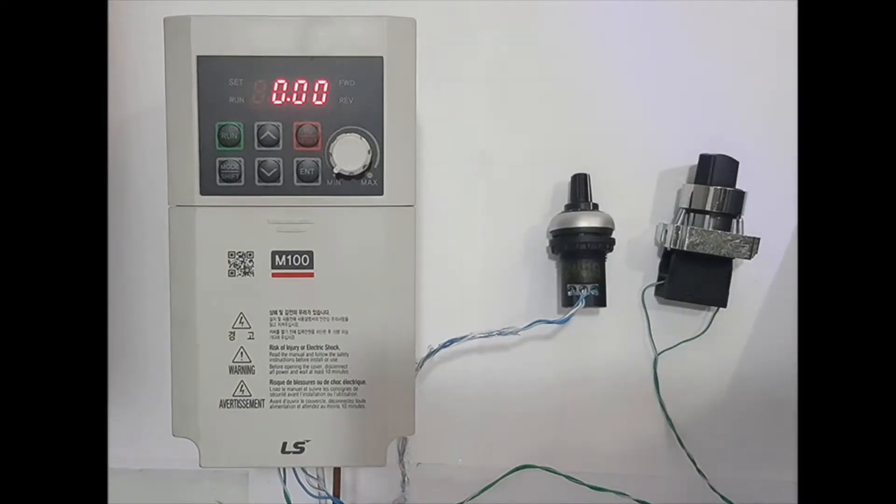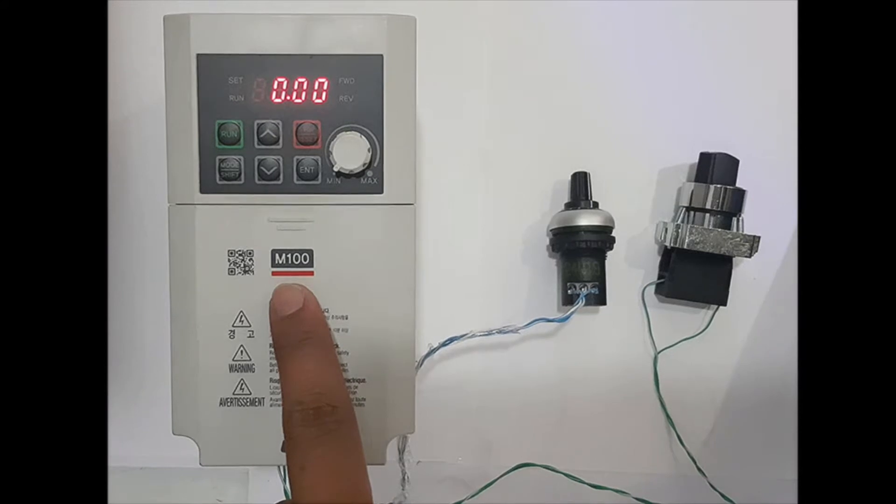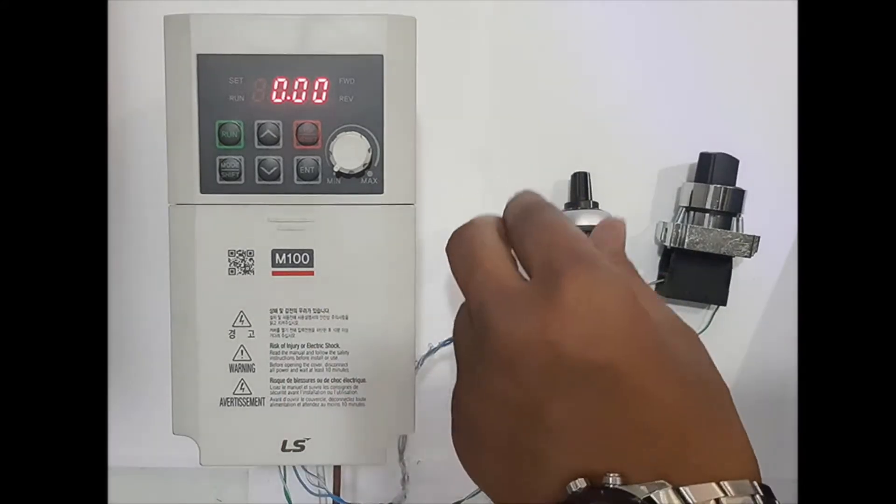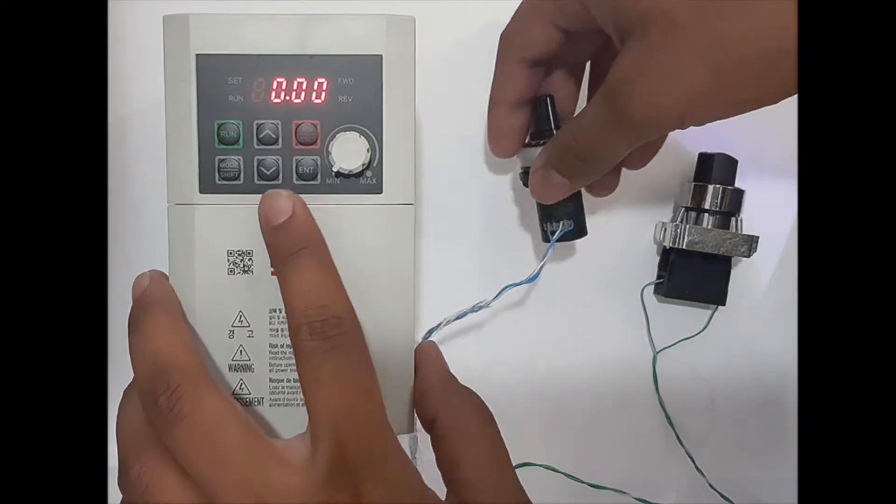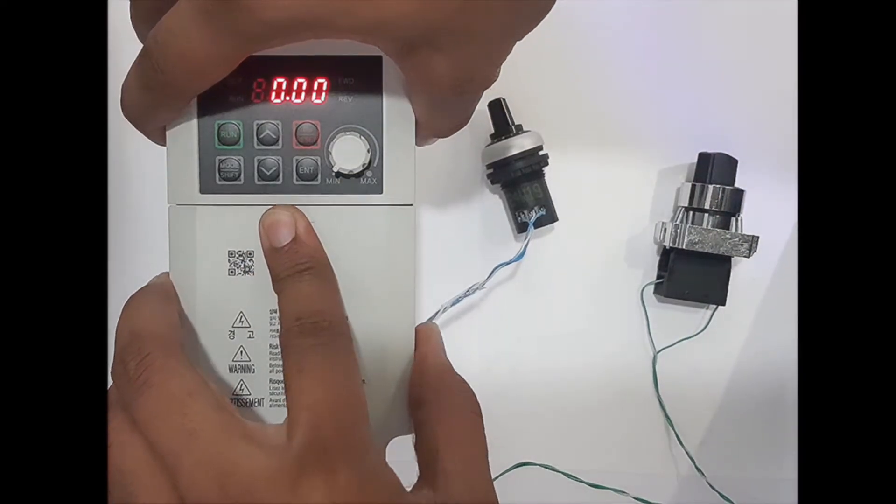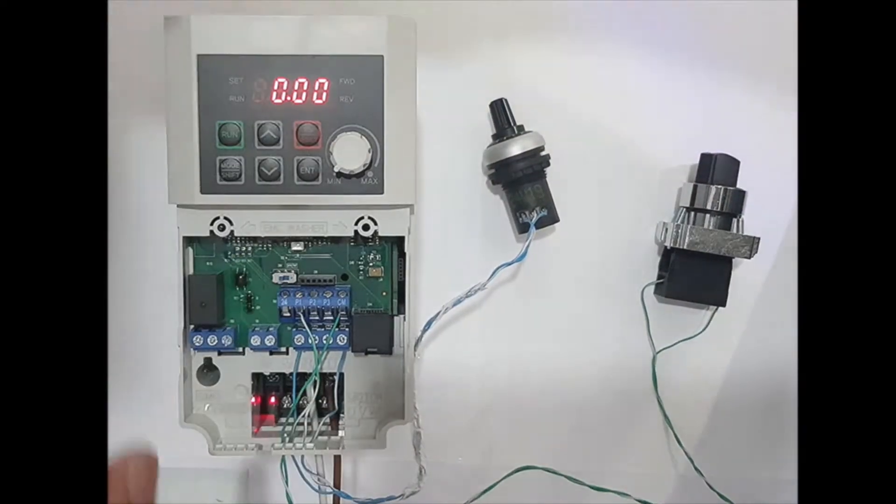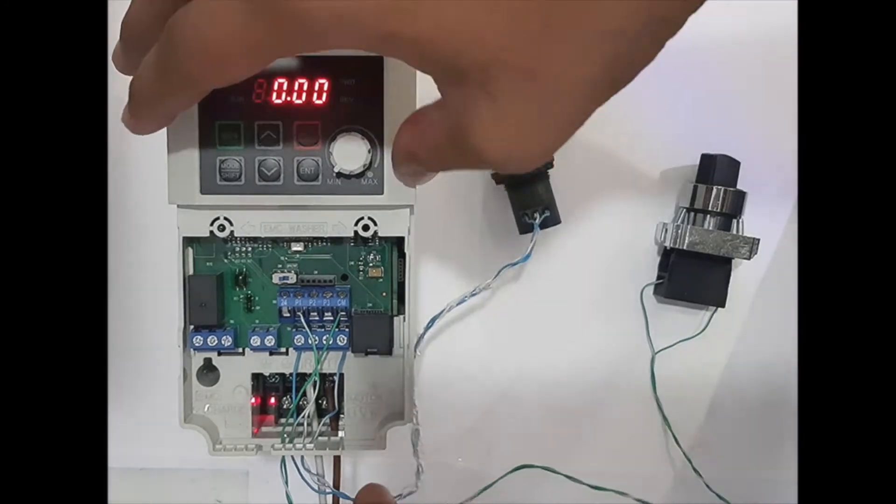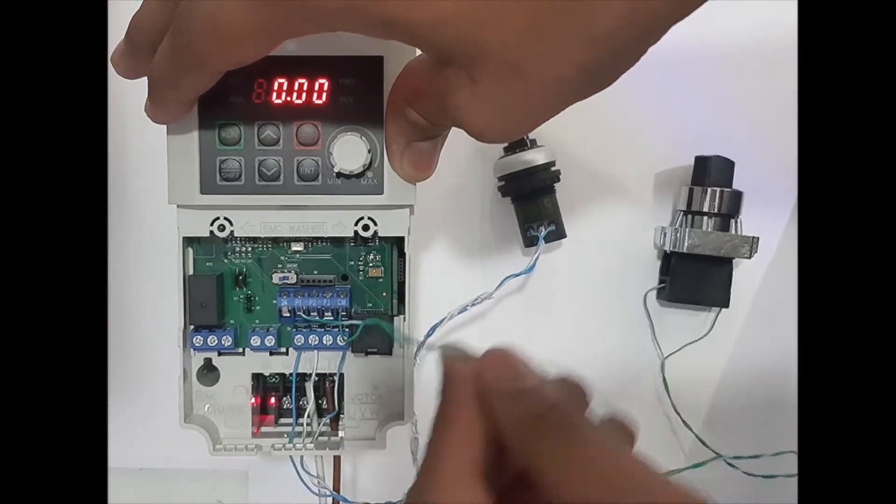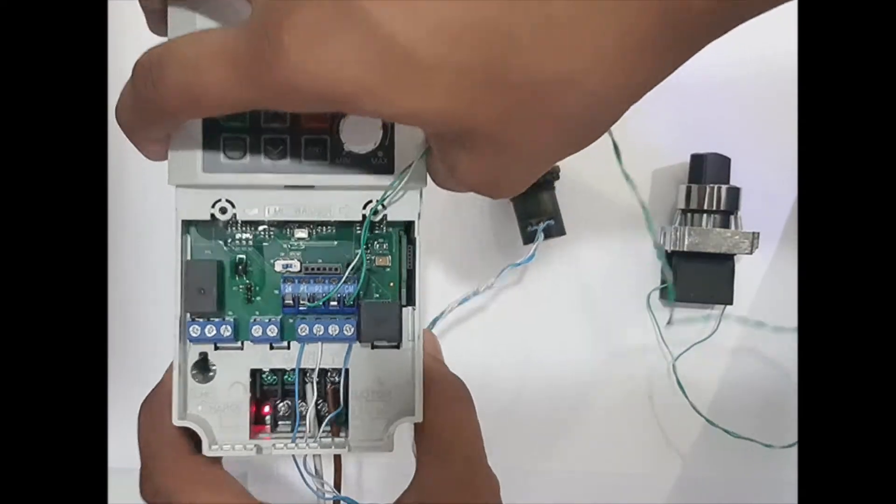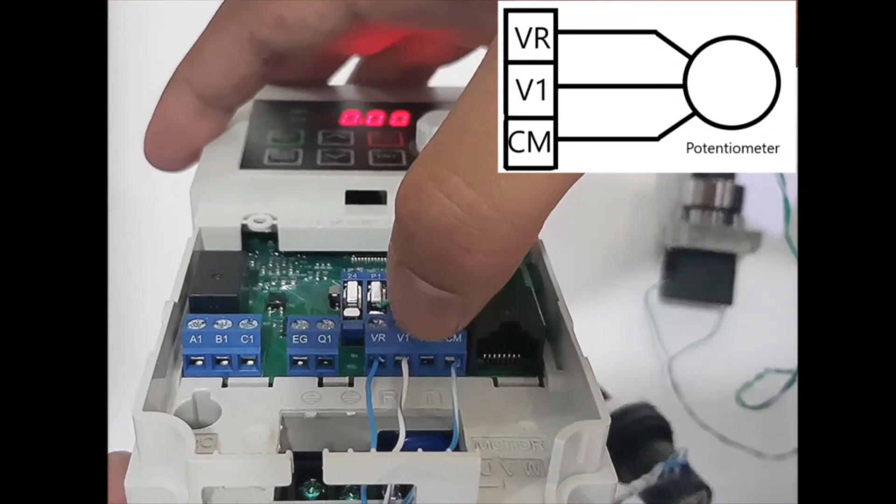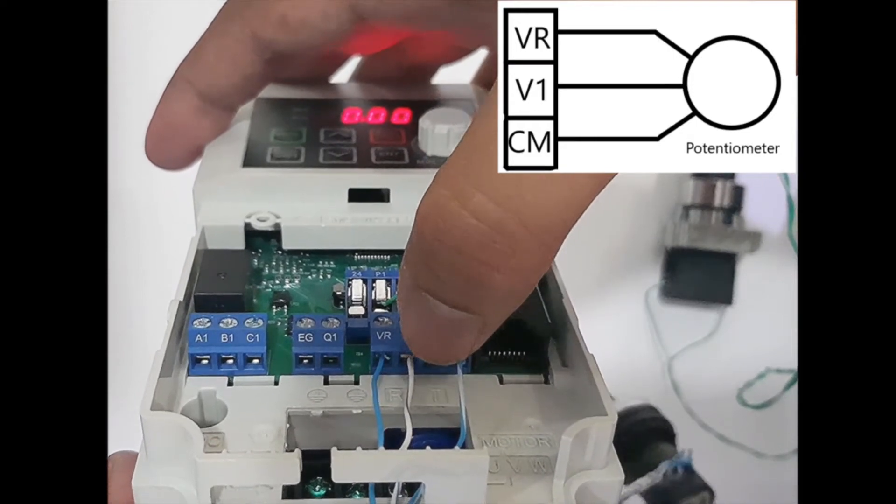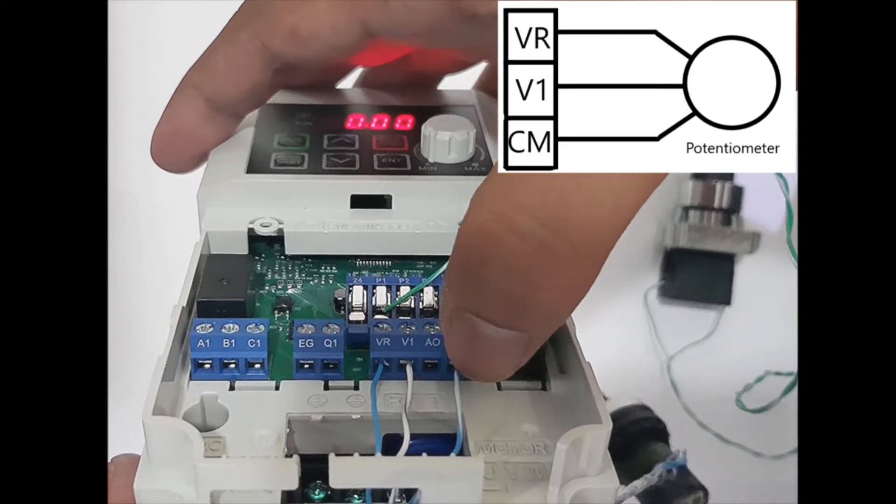In this video I will show you how to control the speed of M100 using a potentiometer. So we'll begin with the connections. I have here three wires from the potentiometer: blue on VR, white on V1, and white blue on CM.